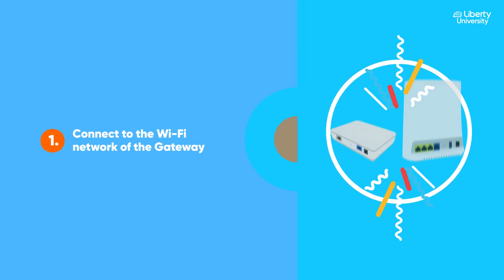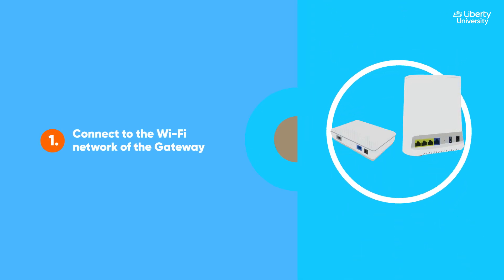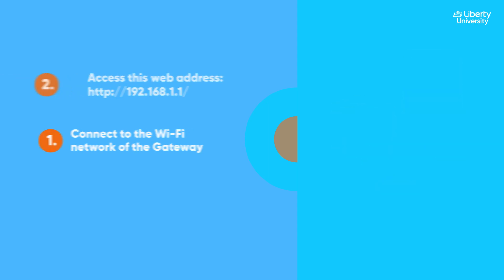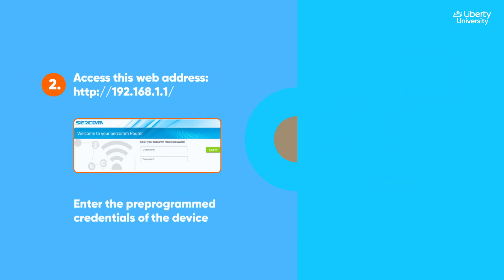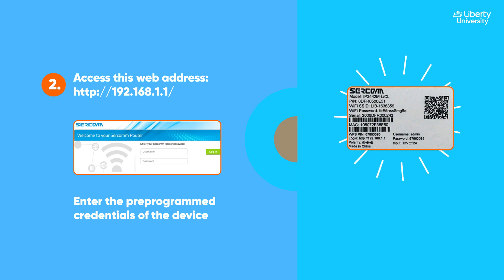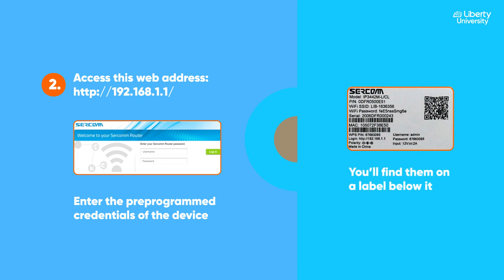Connect to the Wi-Fi network of the gateway. Make sure the gateway is connected via LAN cable to the ONT at all times. Access the web address on the screen. Enter the pre-programmed credentials of the device — you'll find them on a label below it.